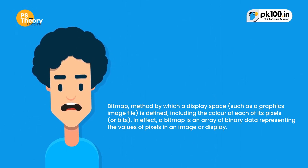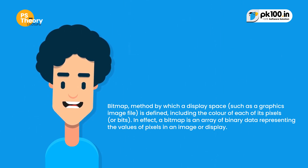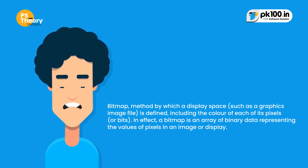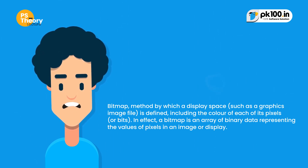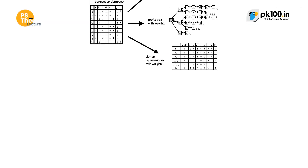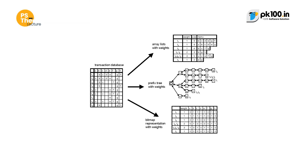In effect, a bitmap is an array of binary data representing the value of pixels in an image or display.